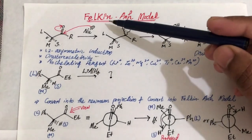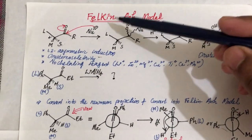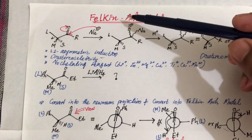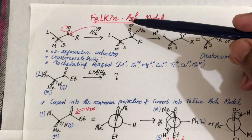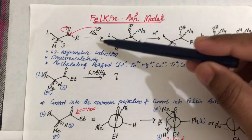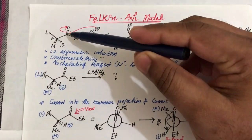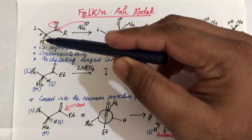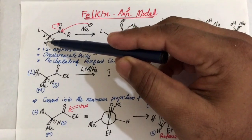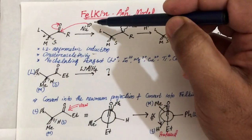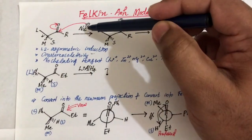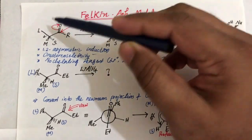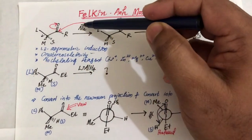Today we are going to discuss the Felkin-Anh model. It is a very important model used to predict the major product in a nucleophilic addition reaction to a carbonyl compound having an alpha chiral center. This is the general mechanism — the nucleophile can approach this carbonyl compound either from above or below.